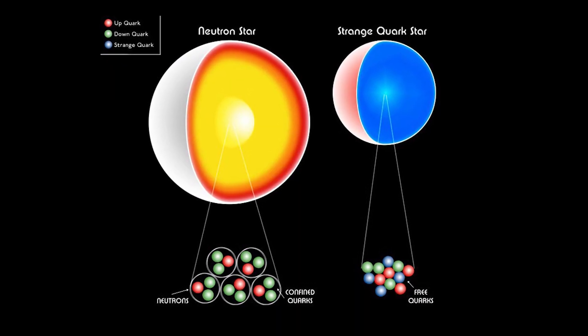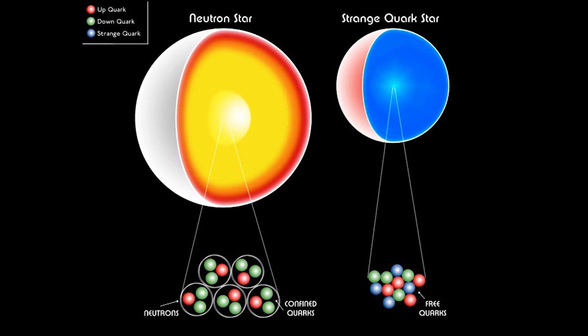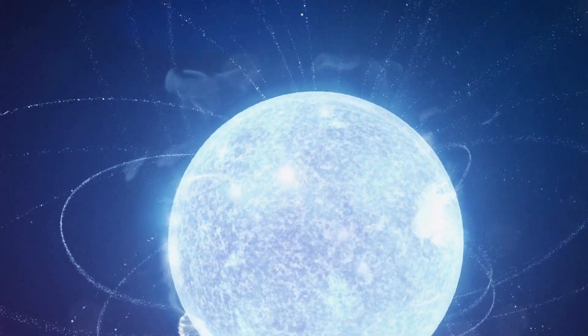Under very high pressures, strange quarks may bond with up and down quarks to form triplets called strangelets, which may be stable, in the same vein as the intense pressures seen in the region just above a neutron star.